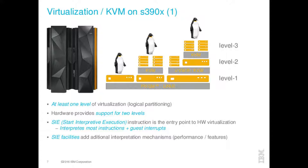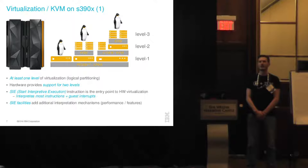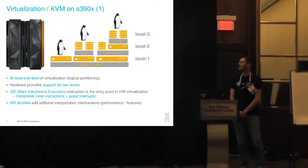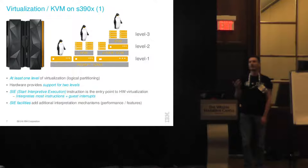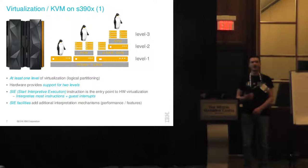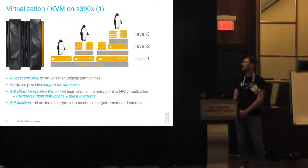You might wonder why the first slide said 'nested nested virtualization.' On IBM Z systems we always have at least one level of virtualization, provided by PR/SM, the alpha hypervisor, which cuts the hardware into logical slices. On top of that we can run Linux KVM or the classical hypervisor z/VM, which is already level two — some kind of nested virtualization. What we want to do is yet another level, for example running KVM under KVM or KVM under z/VM, putting us at level three.